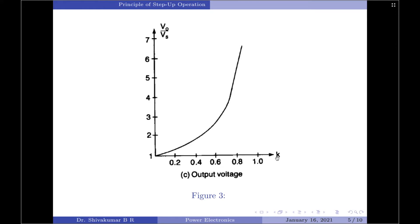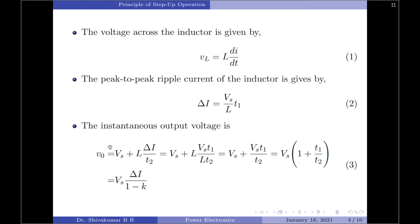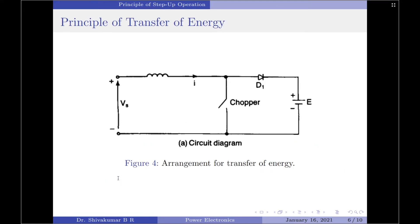In the graph, the x-axis is the duty cycle and the y-axis is V₀/VS. At higher values of k, the ratio V₀/VS becomes almost vertical, so the value of k should never be allowed to reach unity. From the output voltage equation, the minimum instantaneous output voltage is VS and the maximum depends on k; importantly, the instantaneous output voltage is always greater than the input supply voltage. Therefore the average output voltage will always be greater than the input voltage. This step-up principle can also be applied to transfer energy from one voltage source to another, as shown in Figure 4.